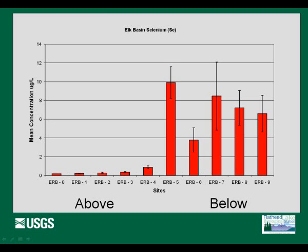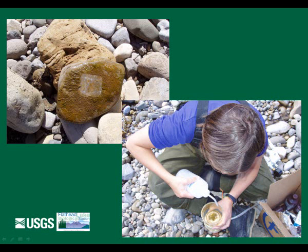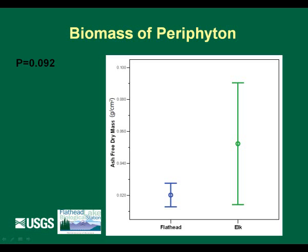Moving on to the effects of this mining on aquatic life, we looked at algae as well as macroinvertebrates. With algae, we collected periphyton and returned it to the laboratory for various kinds of analyses, looking at biomass periphyton. What we see is much higher mean values as well as a much broader range of standard deviations around those means because it's very patchy — some values are very low, but other values are much higher than the Flathead. It's not statistically significantly different, but it gives you a general idea of the trends, particularly with much higher periphyton occurring in the Elk where it's affected by the mining.